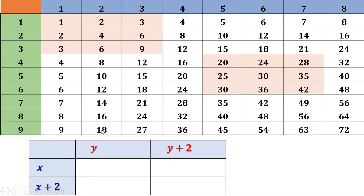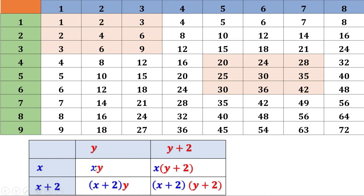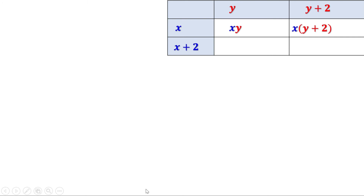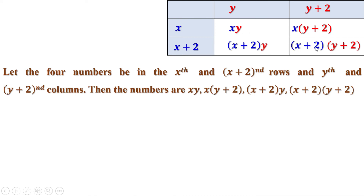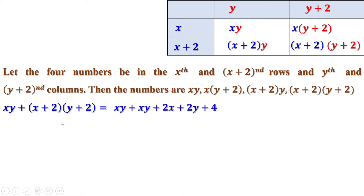We know each number in the multiplication table is the product of its row number and column number. The row number of the first corner is x and the column number is y, so this is xy. The other corners are: x into y plus 2, x plus 2 into y, and x plus 2 into y plus 2. Now let us find the diagonal sum: xy plus x plus 2 into y plus 2. Expanding: x into y is xy, x into 2 is 2x, 2 into y is 2y, 2 into 2 is 4. So this is xy plus xy plus 2x plus 2y plus 4, which equals 2xy plus 2x plus 2y plus 4.